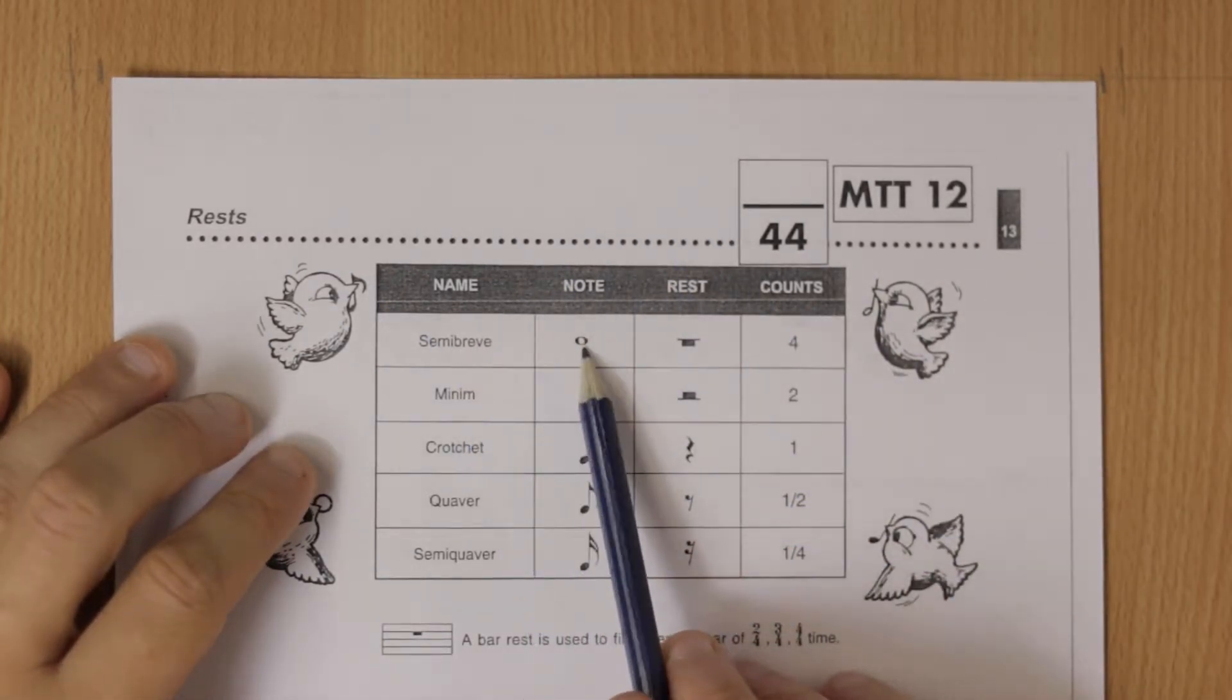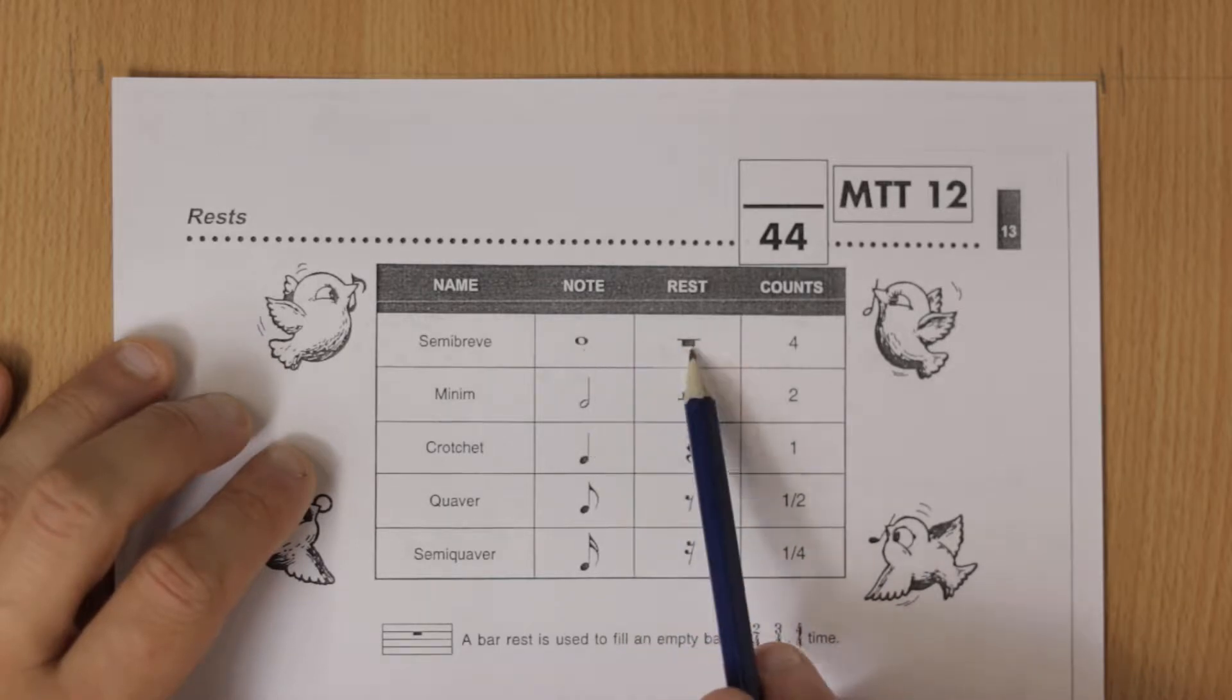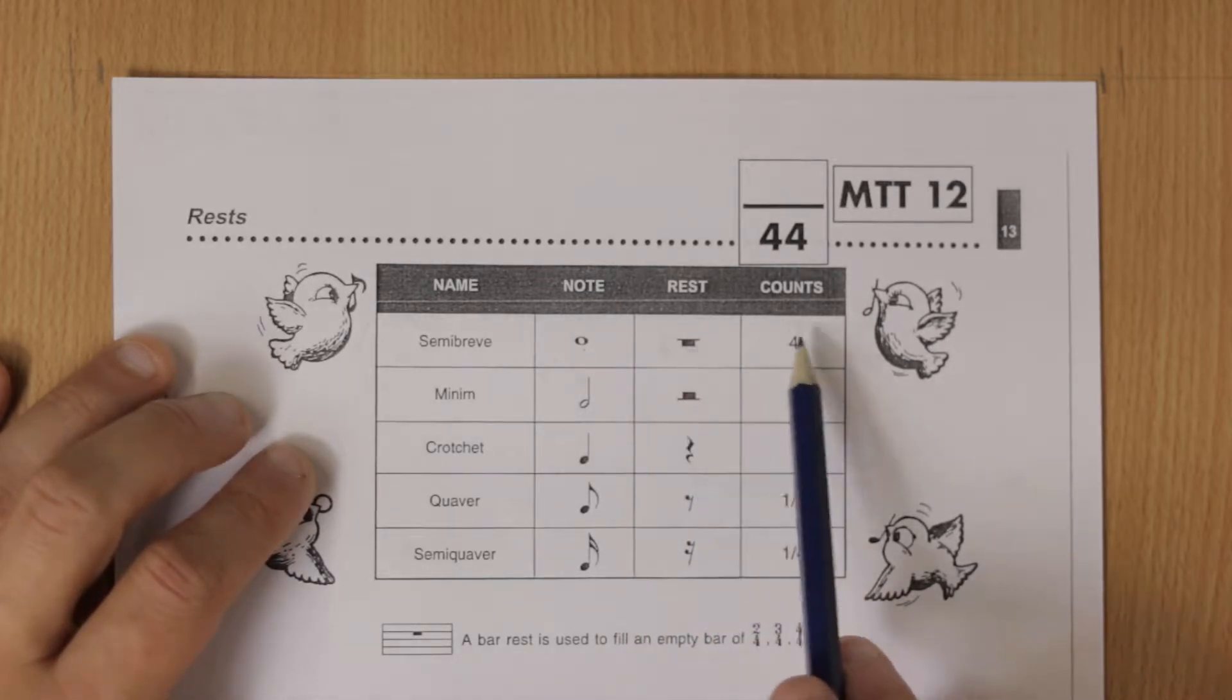Semi-breve—the note looks like that and the rest is a rectangle hanging from the line. Remember semi-breve is four beats. Semi-breve rest is heavy. It's hanging down from the line.